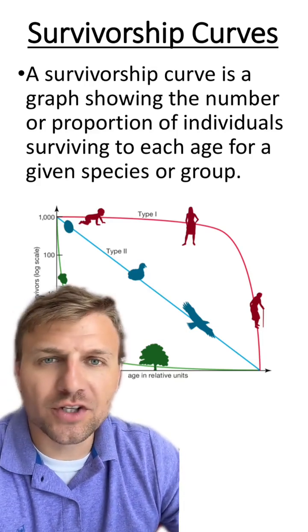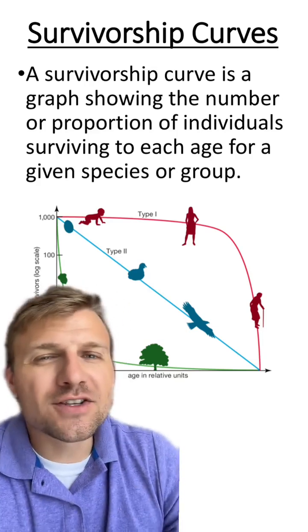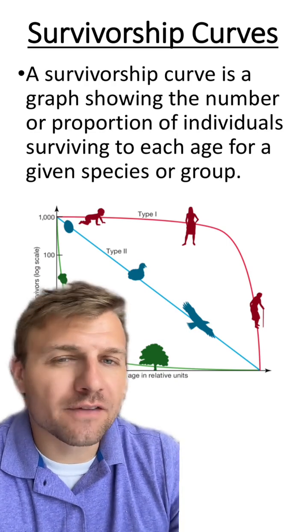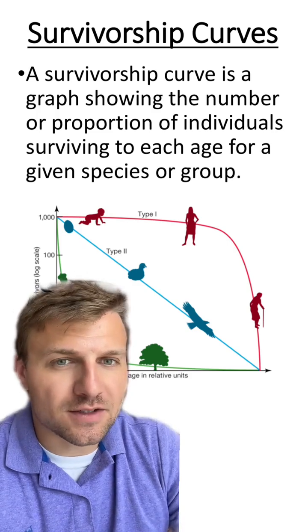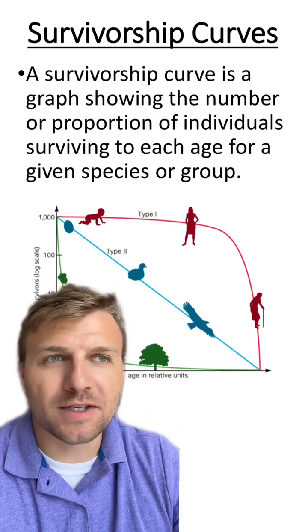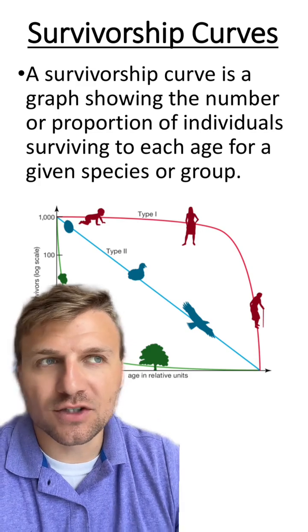Let's go over a concept within ecology known as survivorship curves. These are graphs that show the relative number of individuals that are surviving for an age group within a given species. This is basically showing how species survive from infancy to old age.